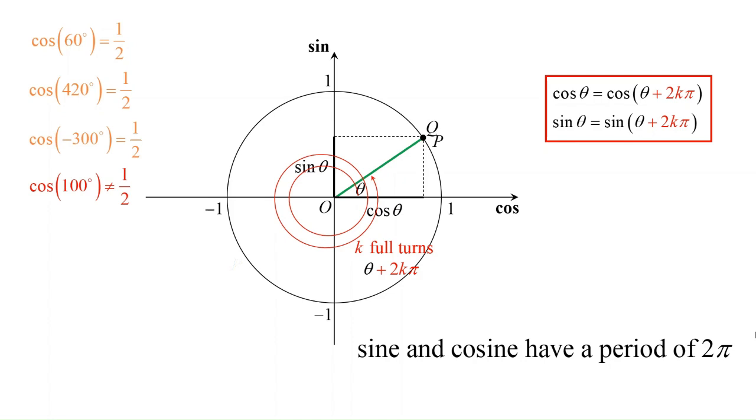So now that we have an idea about period of sine and cosine, now what about the period of the tan ratio?